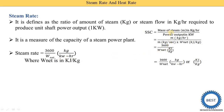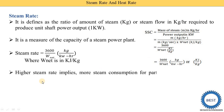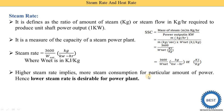Power output is equal to mass multiplied by net work, and the unit of net work is kilojoule divided by kilogram. A higher steam rate means more steam consumption for a particular amount of power. Hence, a lower steam rate is desirable for power plants — a higher steam rate is not a good thing.